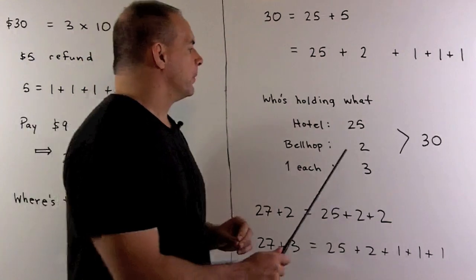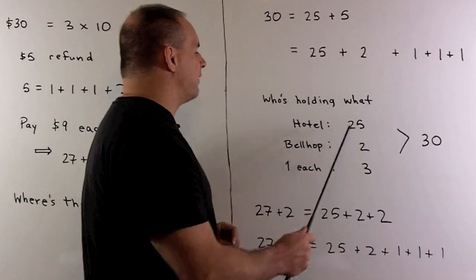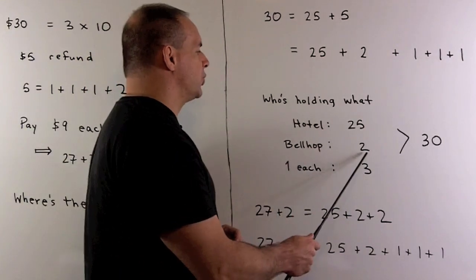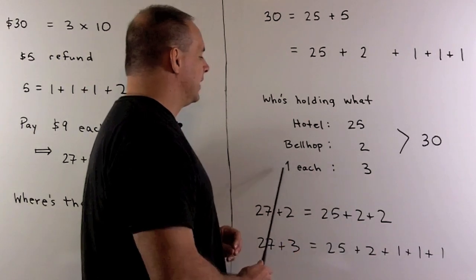Now, who's holding what? Well, the hotel has $25. The bellhop has $2. The guests have $3.